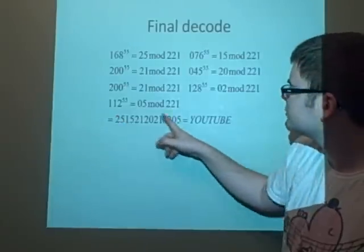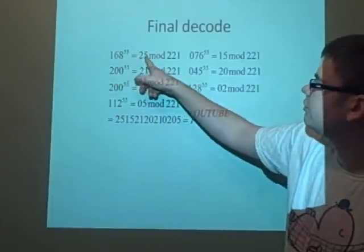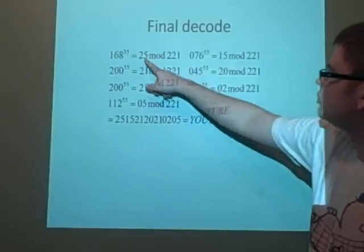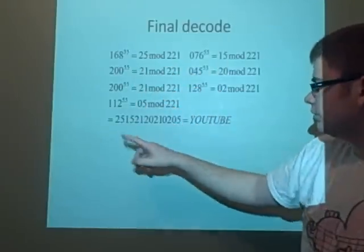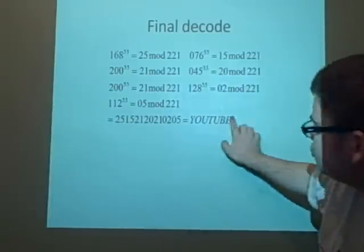And then we've got this message here, so we've compiled them. 168 to 55 is 25 mod 221, 15, 21, 20, 21, 02, 05. We put this together, and this spells out YouTube, which is what we sent out in the first place.